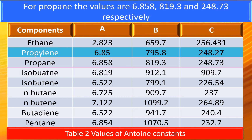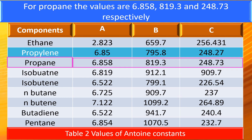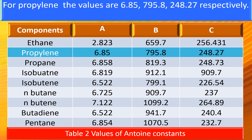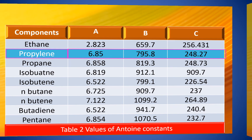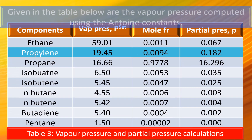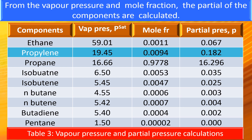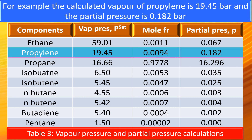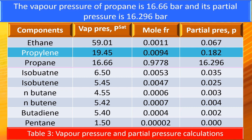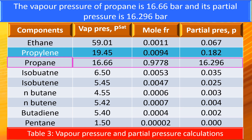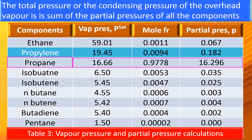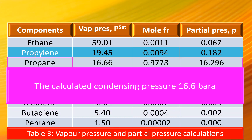For propylene, the Antoine constants are 6.858, 819.3, and 248.73 respectively. For propane, the values are 6.85, 795.8, and 248.27 respectively. Given in the table are the vapor pressures computed using the Antoine constants. From the vapor pressure and mole fraction, the partial pressures of the components are calculated. For example, the calculated vapor pressure of propylene is 19.45 bar and its partial pressure is 0.182 bar. The vapor pressure of propane is 16.66 bar and its partial pressure is 16.296 bar. The total pressure, or condensing pressure, of the overhead vapor is the sum of the partial pressures of all components. The calculated condensing pressure is 16.6 bar absolute.